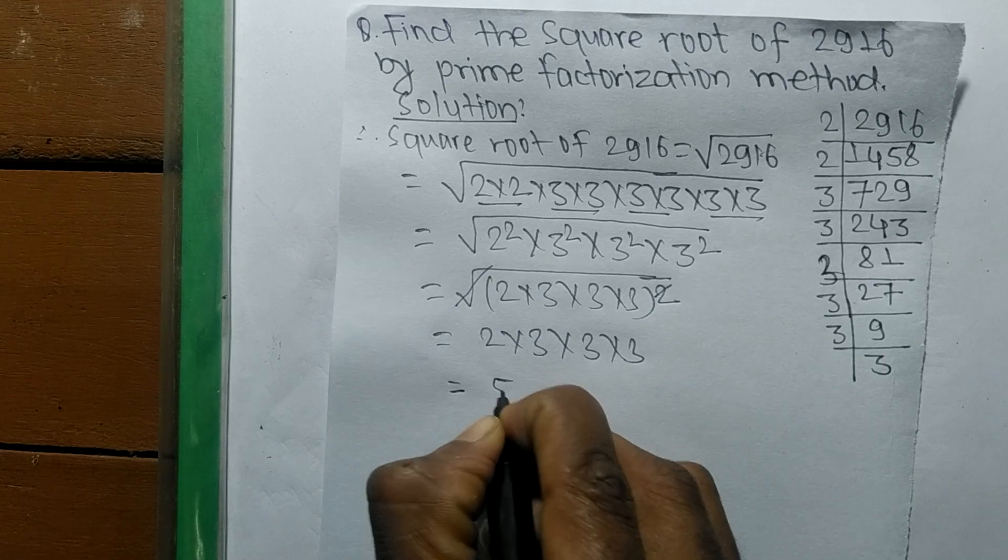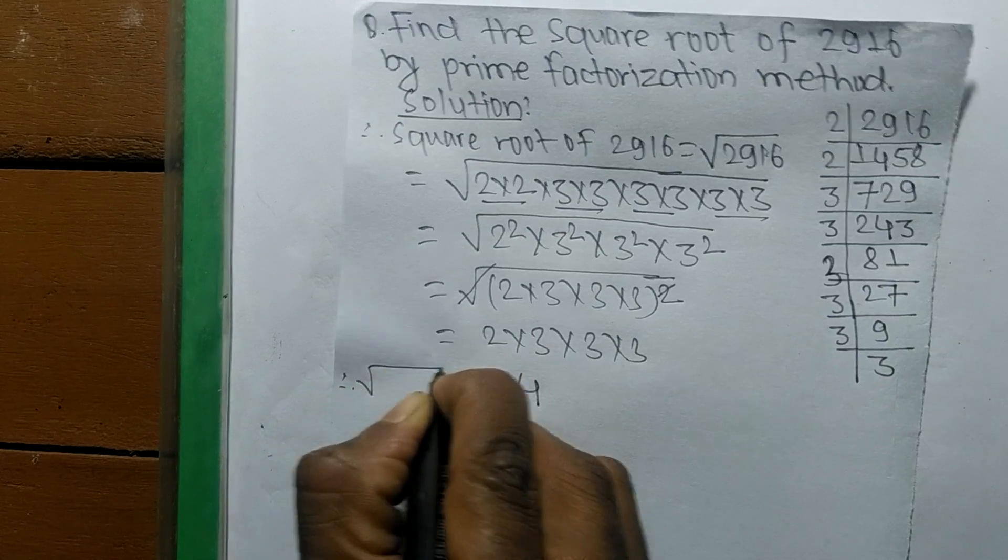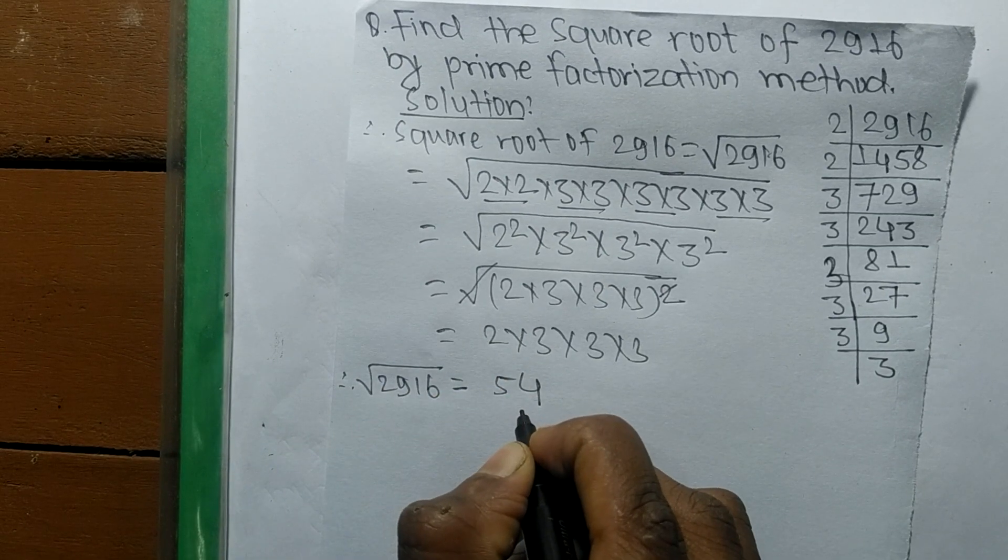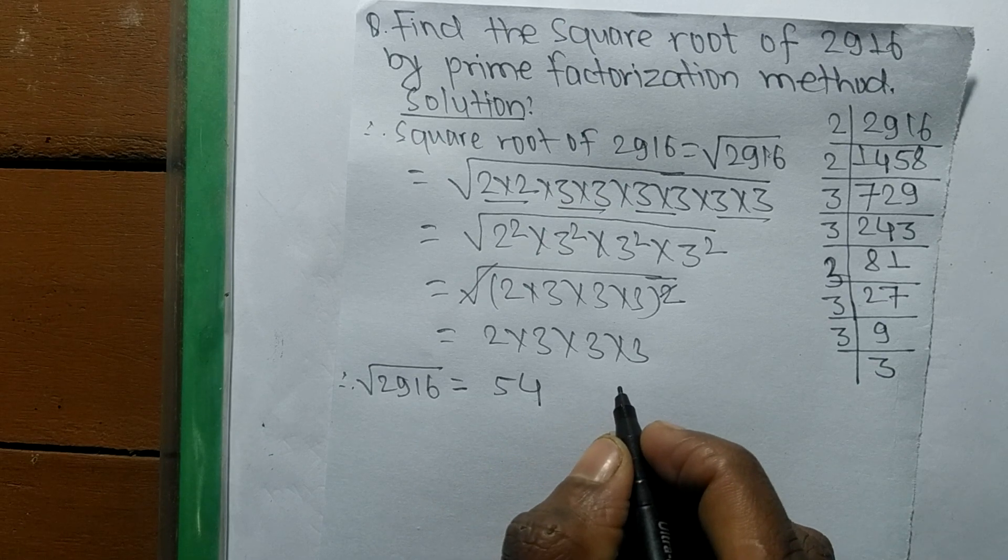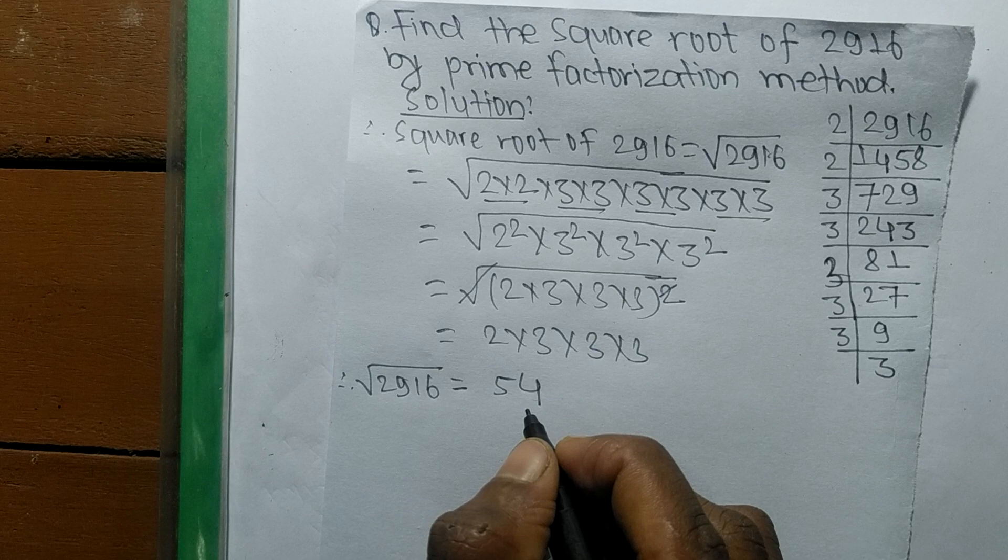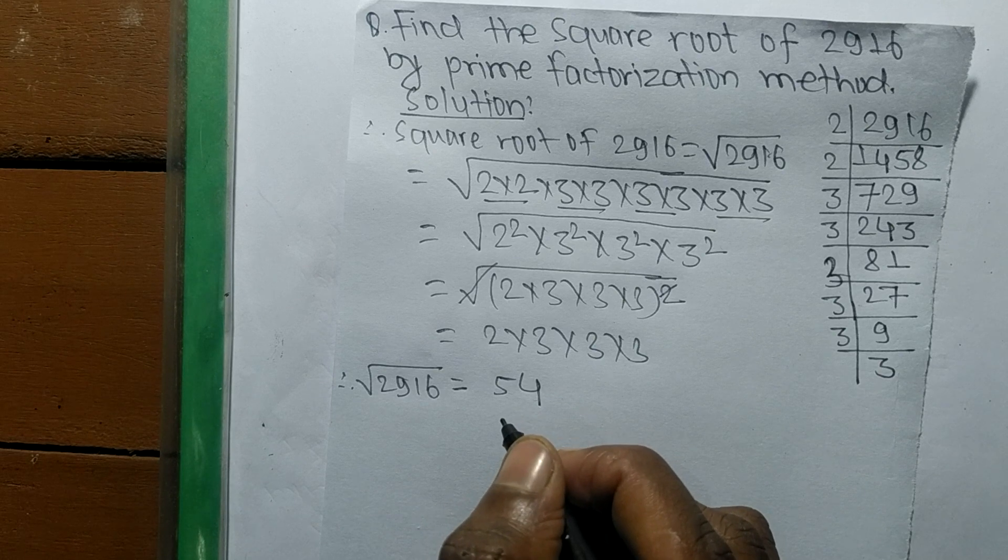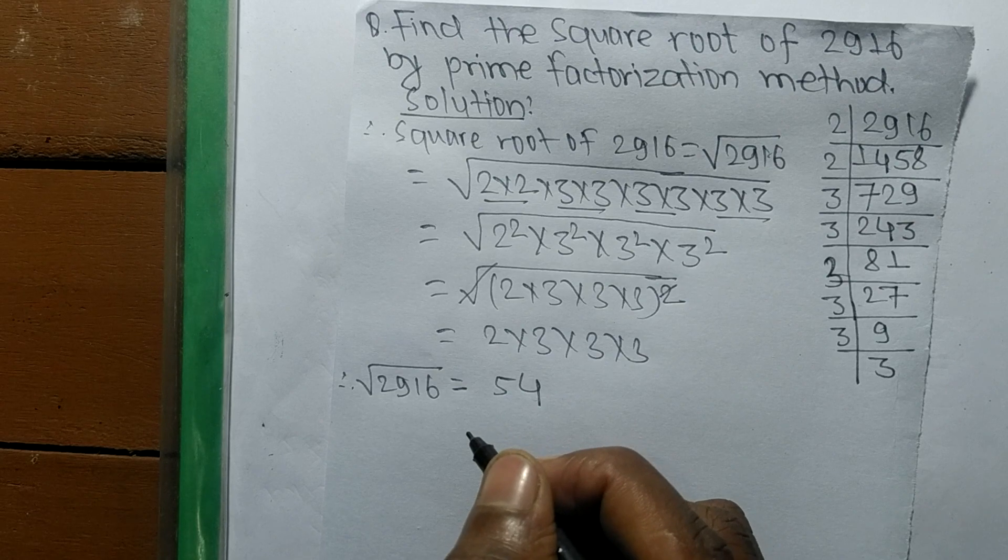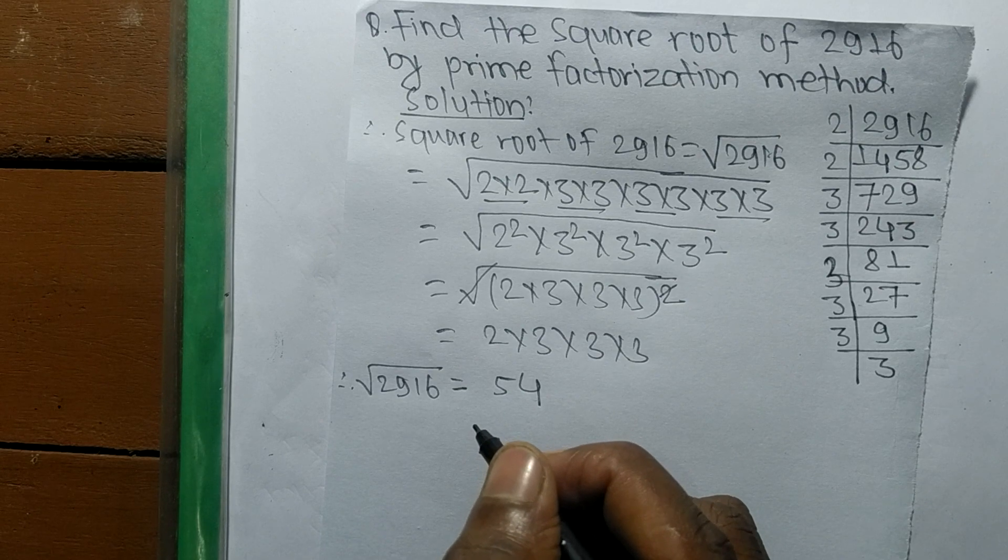So the square root of 2916 is 54. So this much for today. And if you have any question related to math and science, then just comment your question in the comment below and we shall provide a video solution of your question. So thank you.